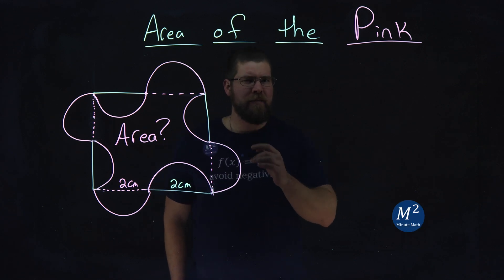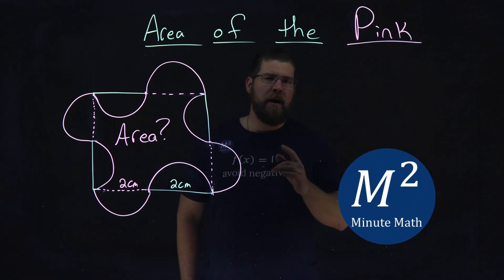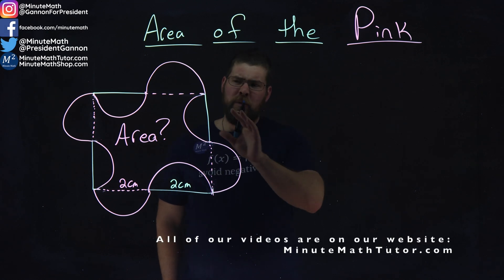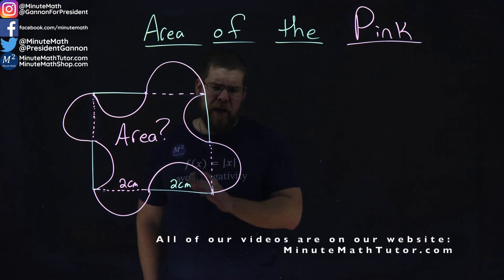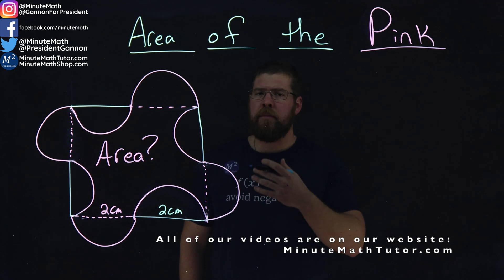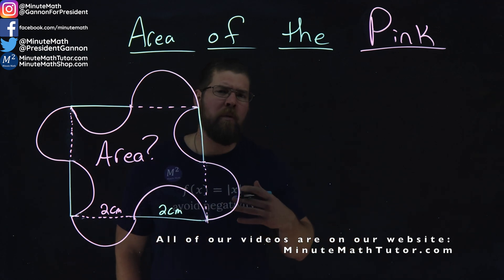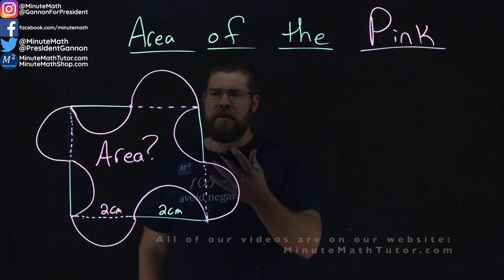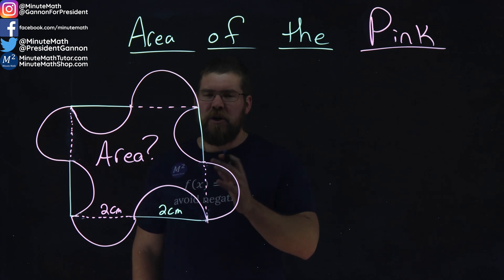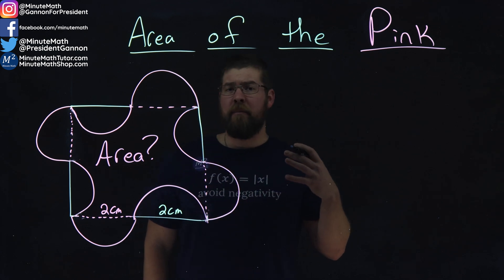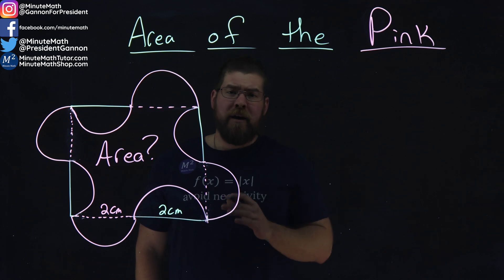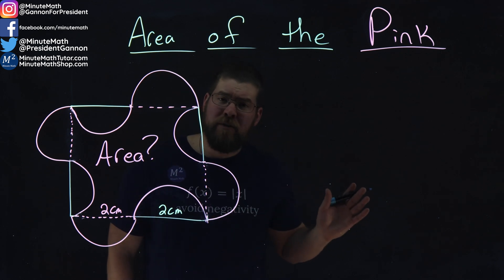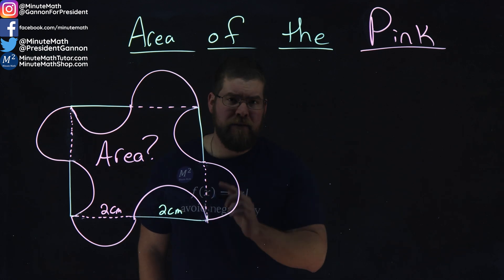Hi, I'm Sean Gannon and this is Minute Math, and we have a different problem today. We want to find the area of the pink region. This is actually a fairly simple problem, but I thought it was worthwhile going over — you can see some tricks here to solve it quickly, thinking outside the box. I know a lot of you will probably advance and know the answer instantly, but I think it's important. There's always a first time seeing something like this.